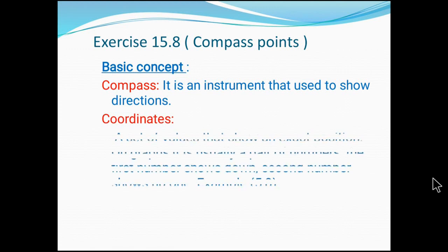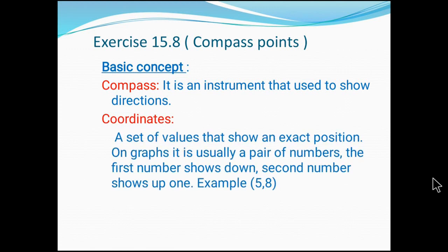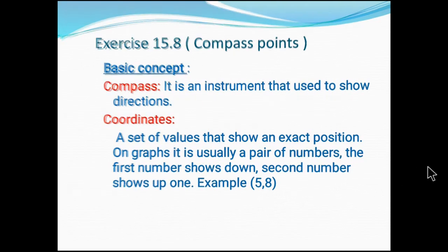Now coordinates: what are coordinates? We can say that it's a certain value that shows exact positions. On a graph, it is a pair of numbers. Look at that. I have given (5,8). Five is the basement number. The first number is always the down number, so five is our basement number. The second number is our up number.